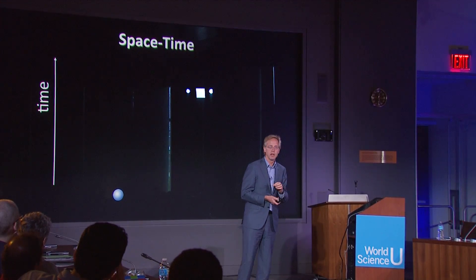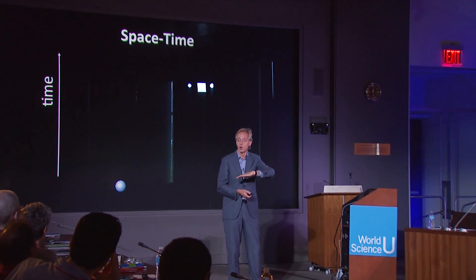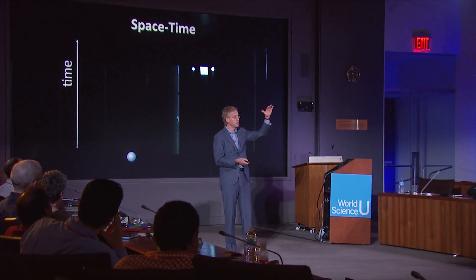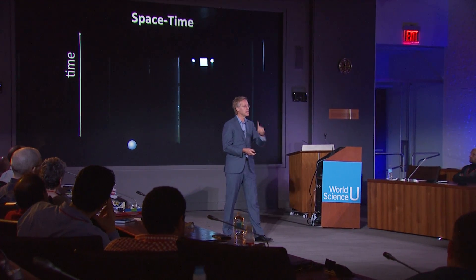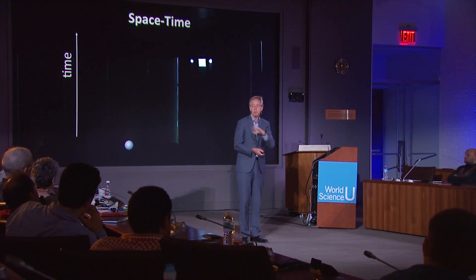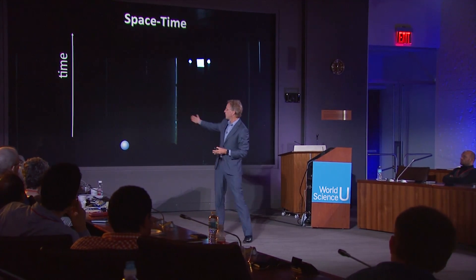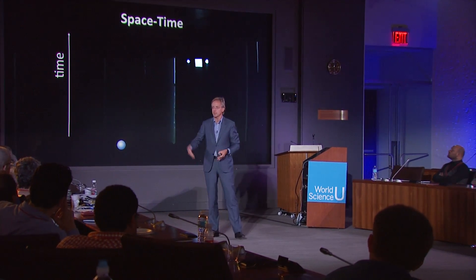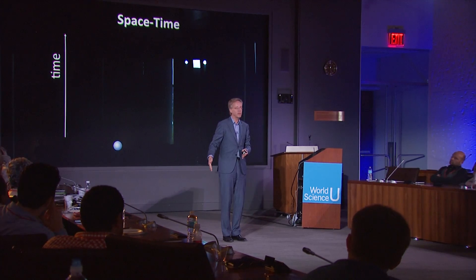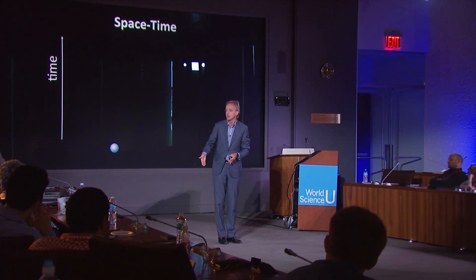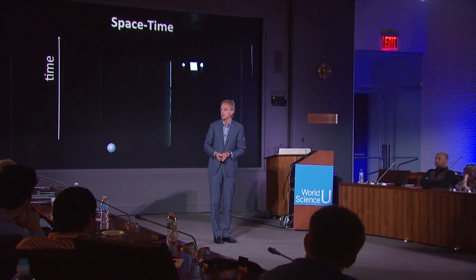Here's our space-time picture — time is running up. Here's an electron, and suppose this electron is allowed to go back in time. Suppose I'm allowed to go back in time — I can go outside, come back, and stand next to myself. I would have exactly the same properties. I would be basically cloning myself.